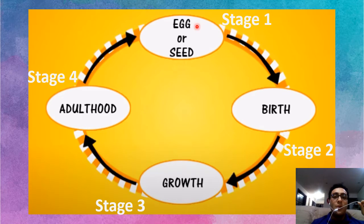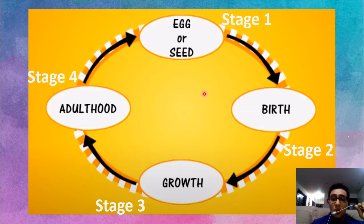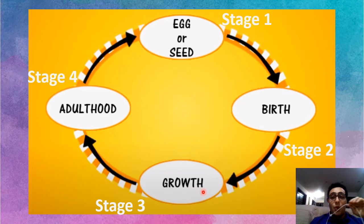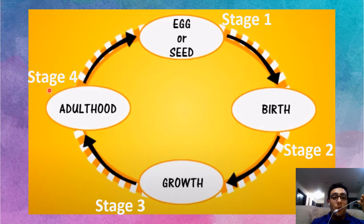Stage one is when there is an egg or seed. Stage two is birth, when it comes out. Stage three is growth, when it becomes bigger and bigger. Stage four is adulthood.